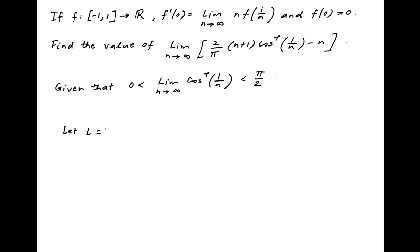Let's denote the limit whose value is to be found by L. Therefore, L is equal to the limit as n tends to infinity of 2 upon pi times n plus 1 times cos inverse of 1 upon n, minus n.